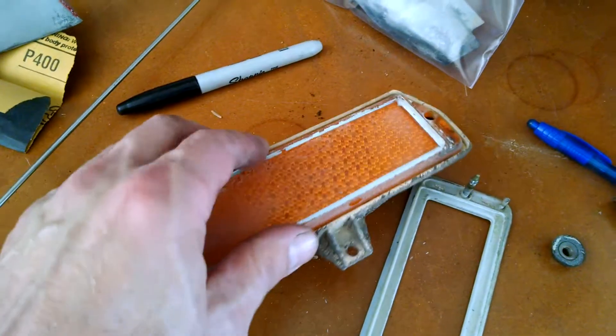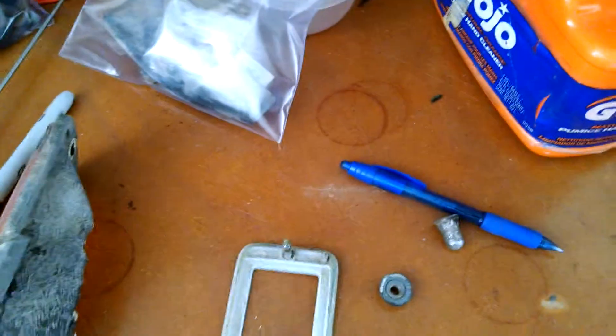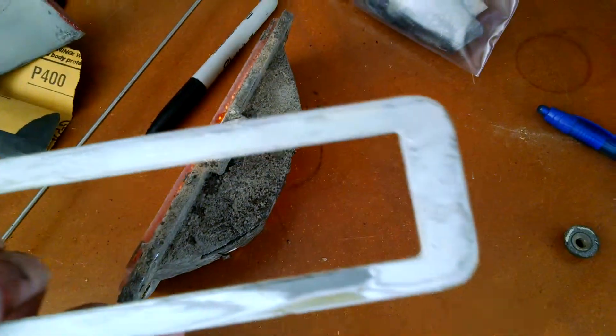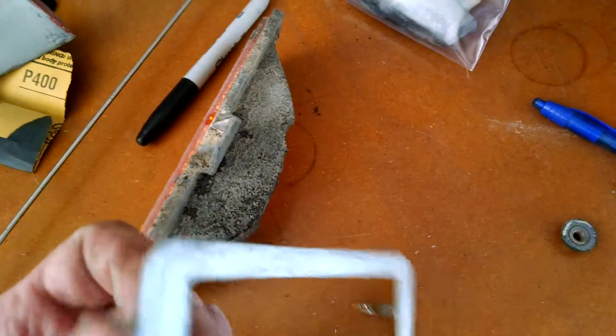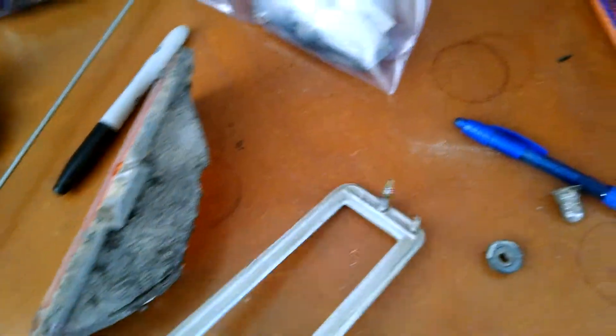And the lens is good, so we'll save that. And the outside is good, so we're going to save that. Less money for having to replace parts you don't really need.